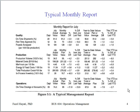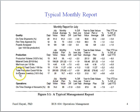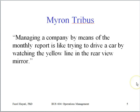To better understand variation, this is a monthly report — Figure 3.1 from Dr. Wheeler's book 'Understanding Variation.' The idea is how do you make sense of such reports. As Dr. Myron Tribus says, 'Managing a company by means of the monthly report is like trying to drive a car by watching the yellow line in the rear-view mirror.' Essentially, it tells you where you have been, but it won't tell you where you're going.